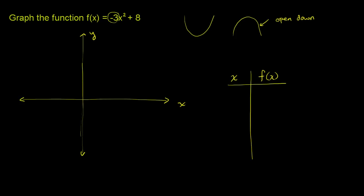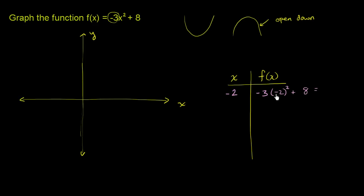Let's try x equals negative 2 first — easy numbers to compute. When x is negative 2, f of x equals negative 3 times negative 2 squared plus 8. Negative 2 squared is 4, times negative 3 gives negative 12, plus 8 gives us negative 4.